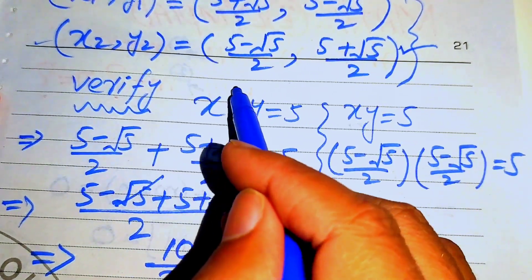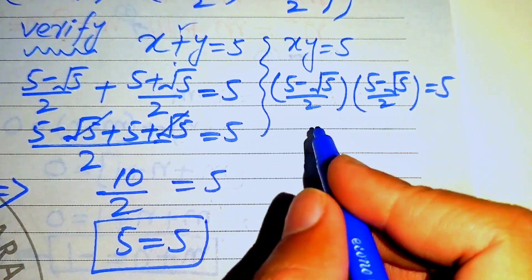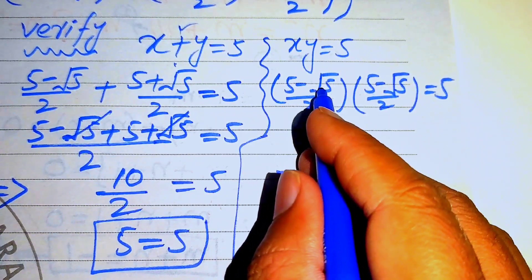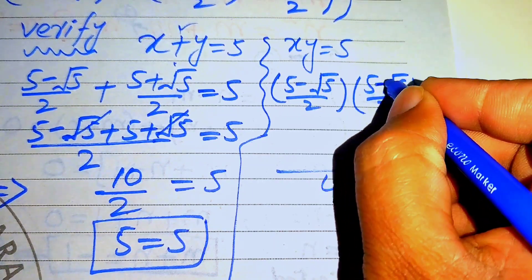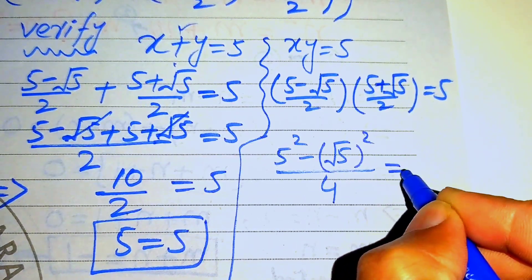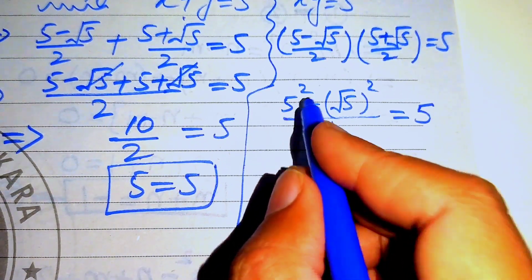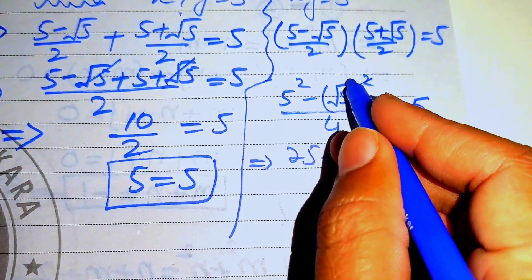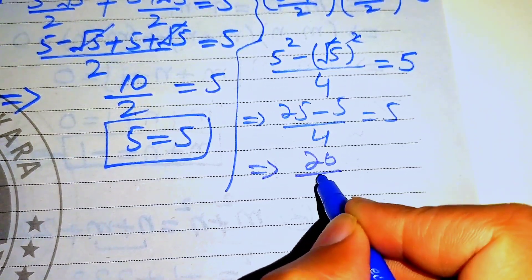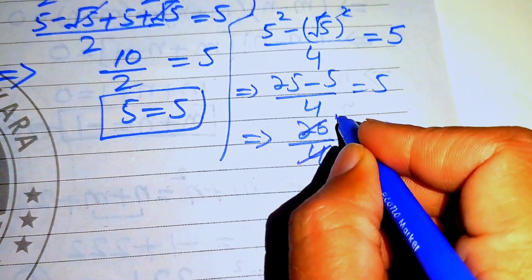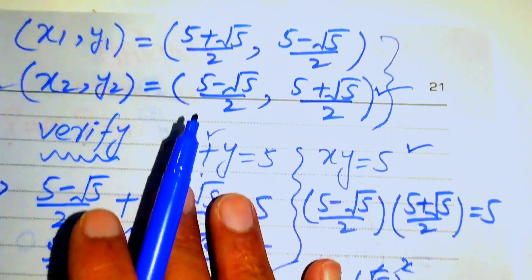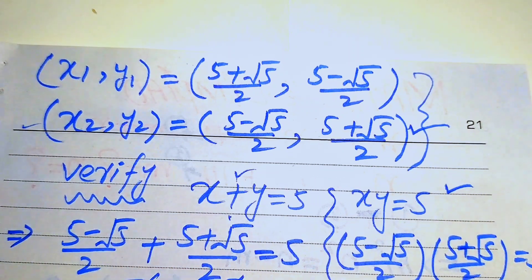Checking the second equation xy equals 5: multiplying the denominators gives 4, and the numerator is (5 minus square root of 5)(5 plus square root of 5), which equals 5² minus (square root of 5)², giving 25 minus 5 equals 20. So we get 20 over 4 equals 5. Both equations are satisfied, confirming these are the correct final solutions.